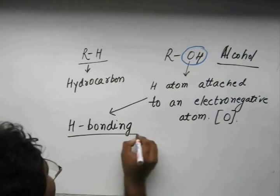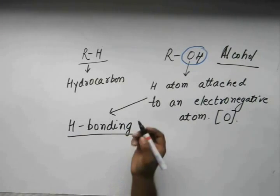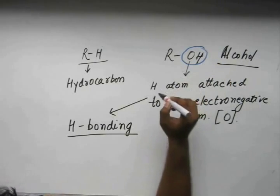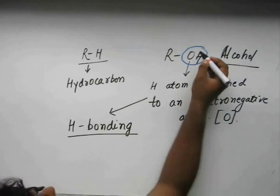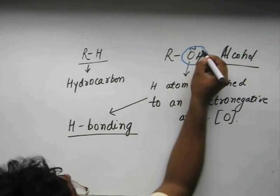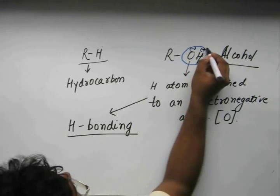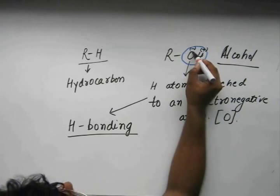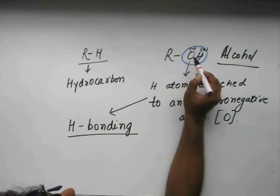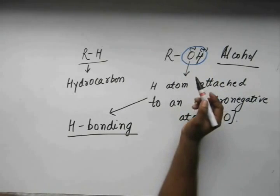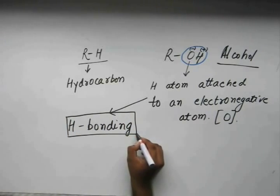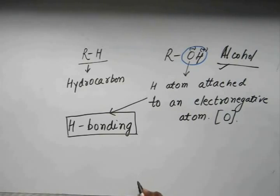So, what is hydrogen bonding? Hydrogen bonding is where a hydrogen atom is attached to an electronegative atom, and this gains a positive charge on it. This is because of the high electronegativity of the O atom, which attracts the bonded pair of electrons between O and H towards itself. Because of this, we have hydrogen bonding acting in the case of alcohol.